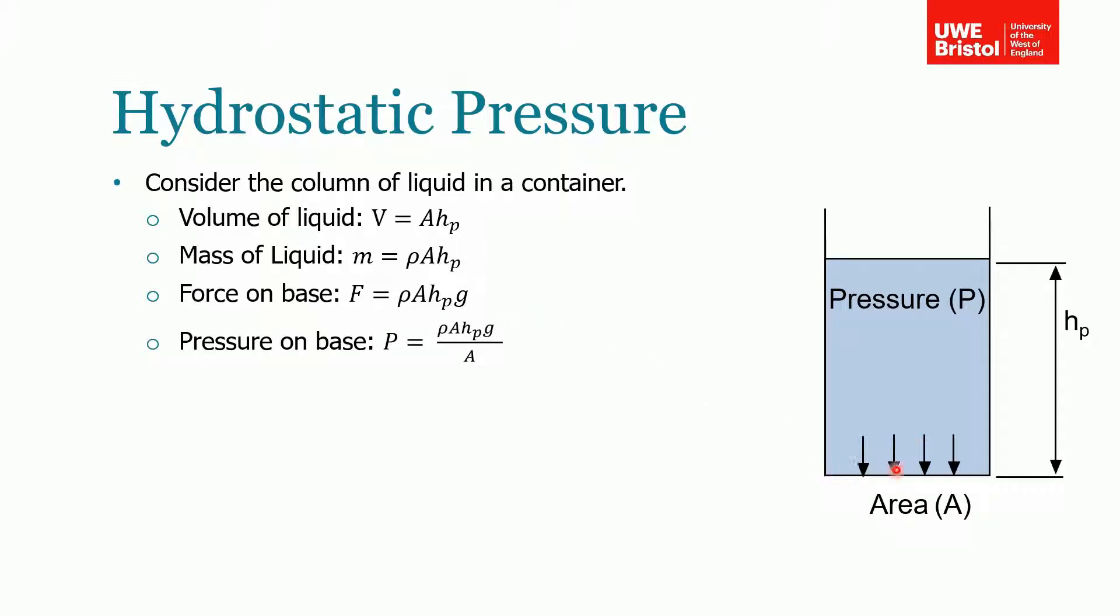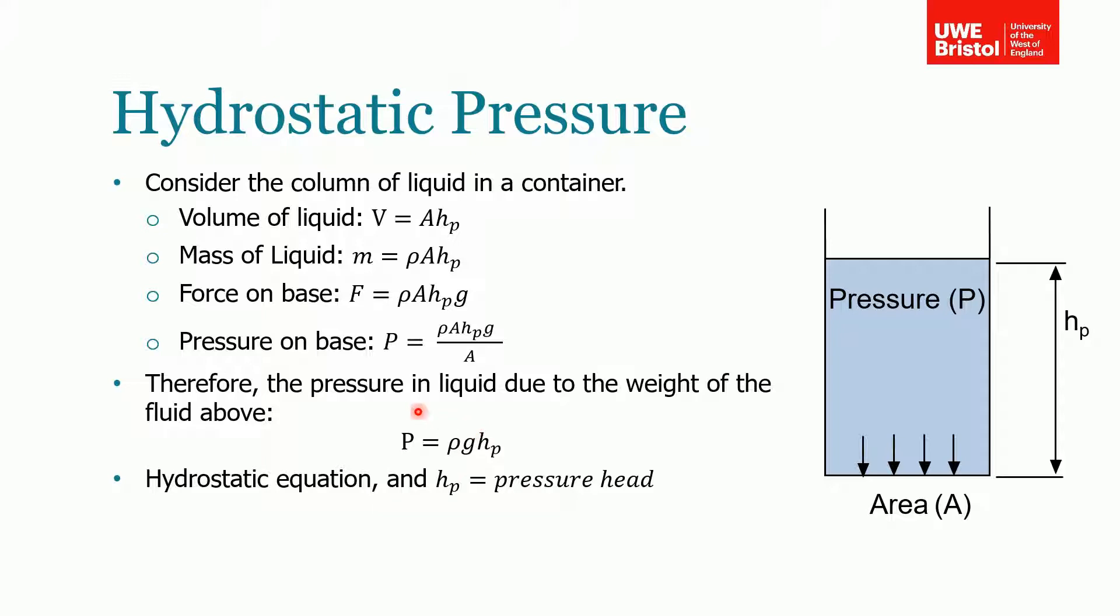Therefore, we've got that force acting on the base of the container. If we've got that force acting on that area, we get a pressure. The pressure is equal to rho A hp g over A. You can see that the two A terms in this equation would cancel. Therefore, the pressure of this liquid due to the weight of the fluid above is P equals rho g h. This is how you define hydrostatic pressure, and it'll be used quite a lot throughout this lecture.